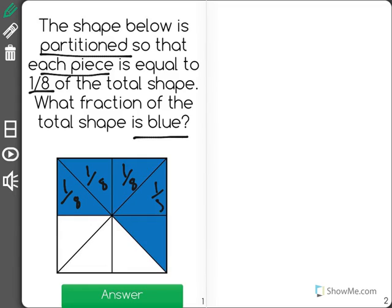So what I'm going to do is I can see that I have all of these pieces shaded blue that are equal to one-eighth. And I see that I have five of them.